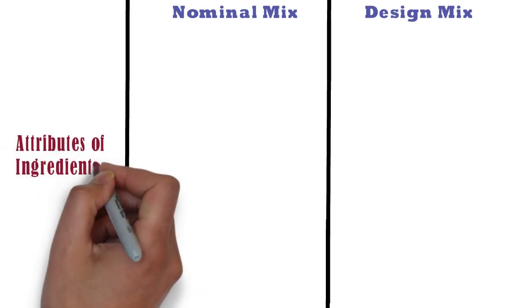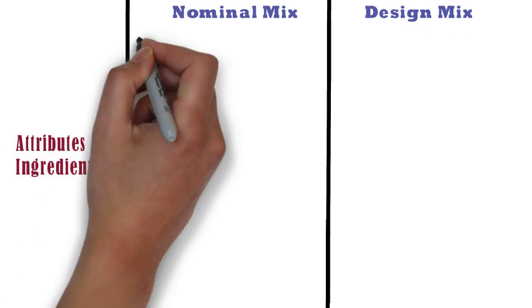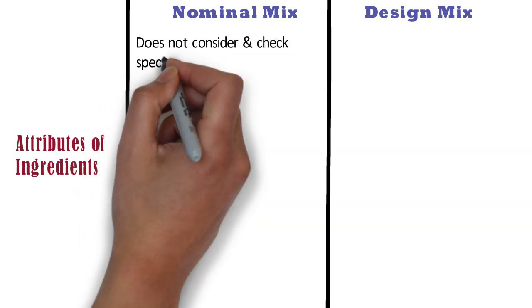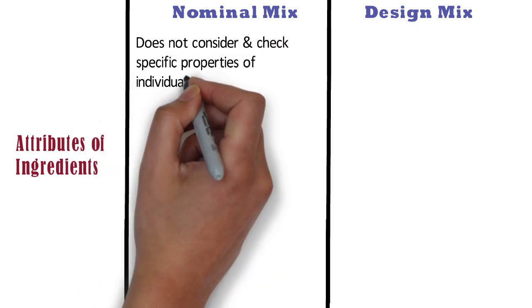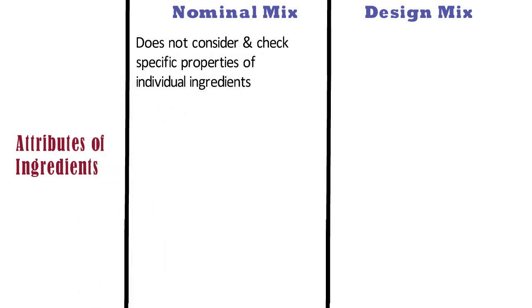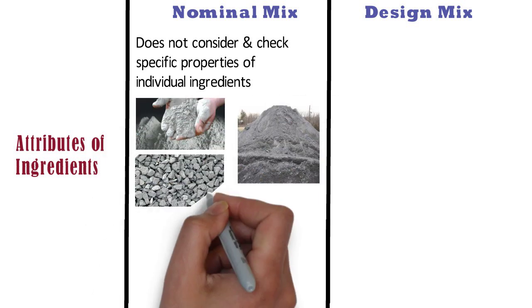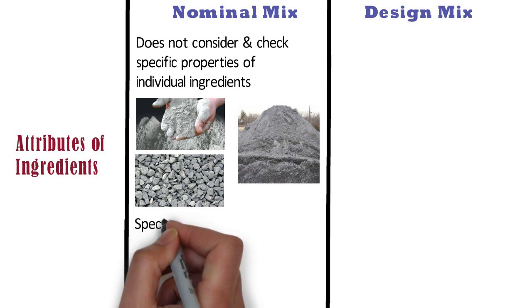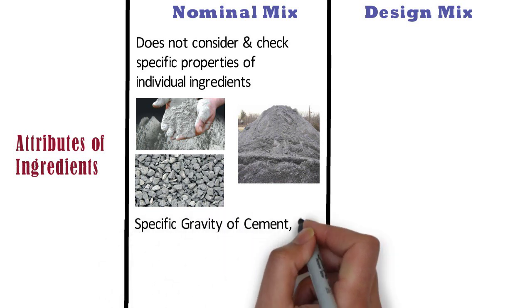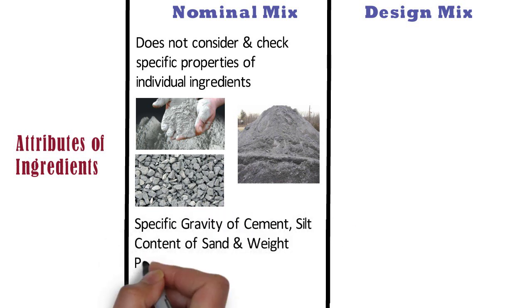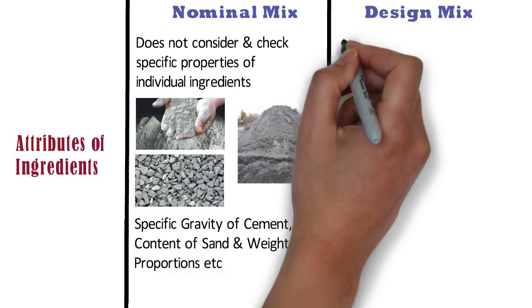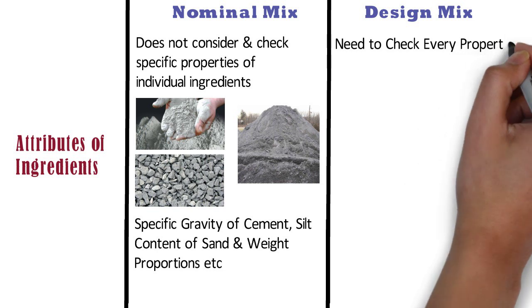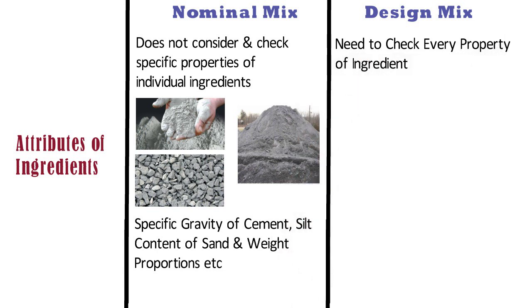Attributes of ingredients: Nominal mix does not consider or check specific properties of individual ingredients, i.e. the properties of cement, sand and aggregates. In nominal mix, we don't actually find the specific gravity of cement, silt content of sand, weight proportions, etc. Whereas in case of design mix, we need to check every property of the ingredients before the mix design is started.